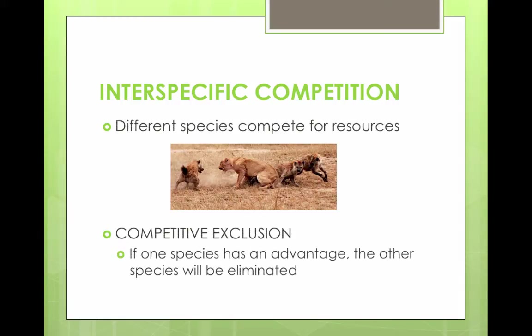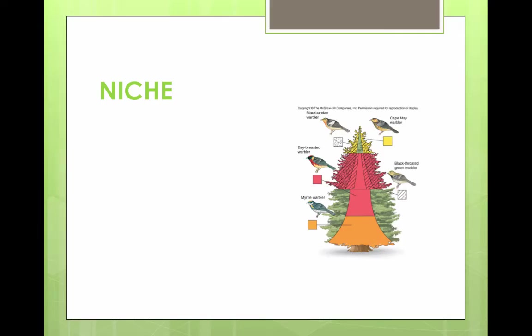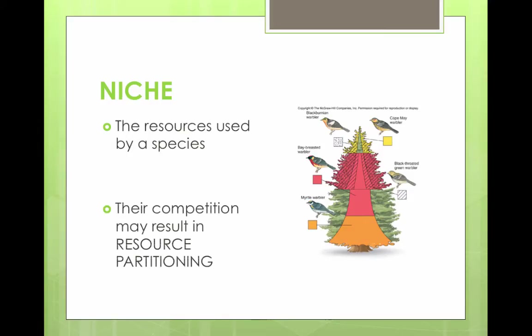Competitive exclusion is when one species has an advantage and could potentially eliminate the other species. A niche refers to the resources used by a species. Two species cannot coexist in the same niche, so their competition may result in resource partitioning, which will differentiate their niches.